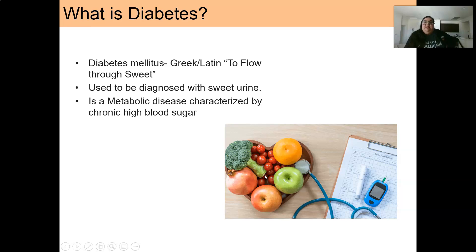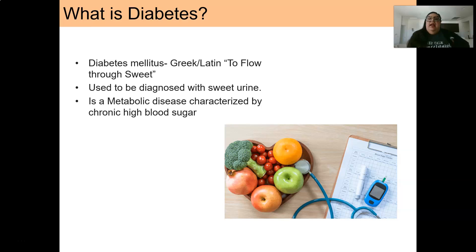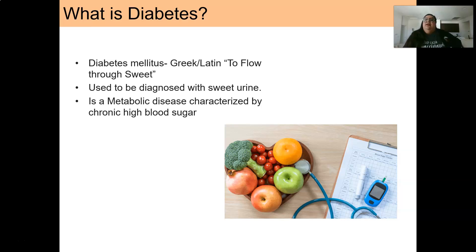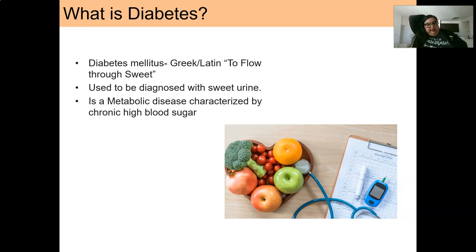So what is diabetes? The term diabetes mellitus is Greek and Latin. It means 'to flow through sweet.' It used to actually be diagnosed by sweet-tasting urine. People with diabetes often urinate frequently, and their urine can be sweet-smelling — and sweet-tasting. We will get into why that is in today's lecture. It is a metabolic disease and it is characterized by chronic high blood sugar.